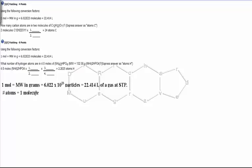The other relationship is that there's going to be a certain number of atoms in one molecule. Alright, so looking at the first one, it asks how many carbon atoms are in two molecules of C12H22O11.